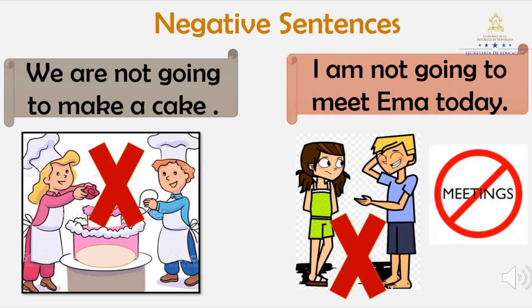Let's continue with the negative sentence. We are not going to make a cake. Repeat: we are not going to make a cake. One more time please: we are not going to make a cake.